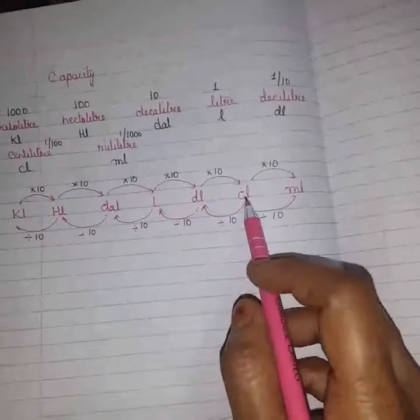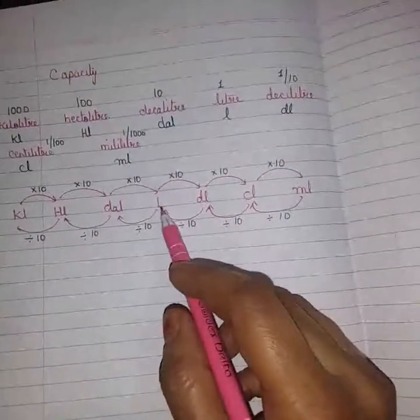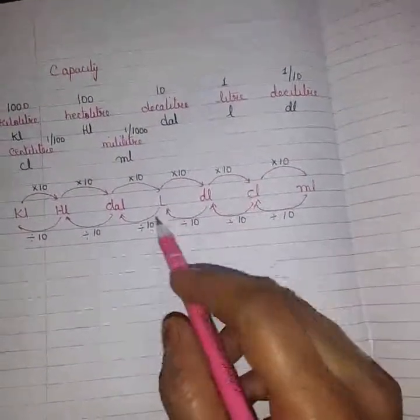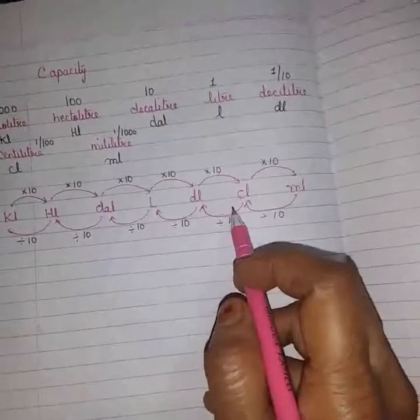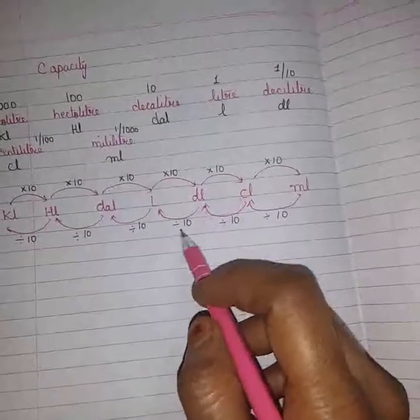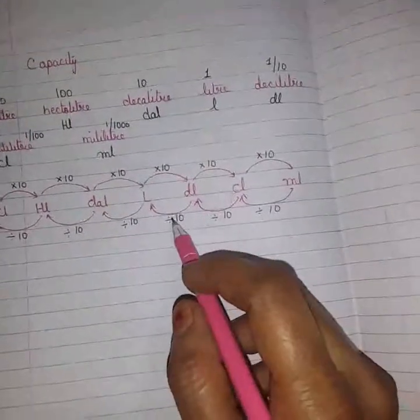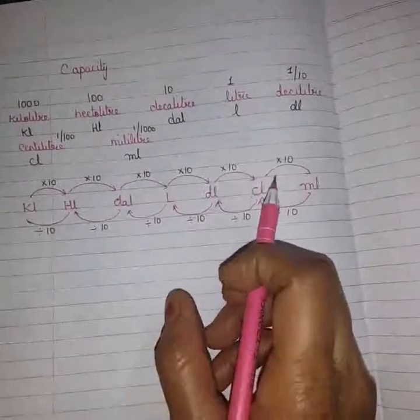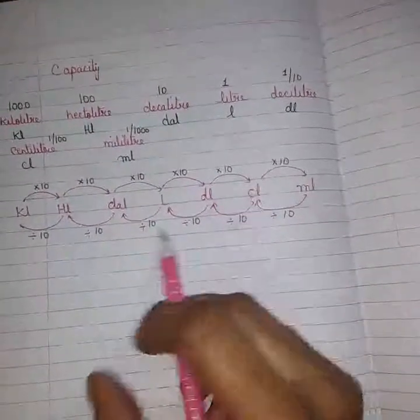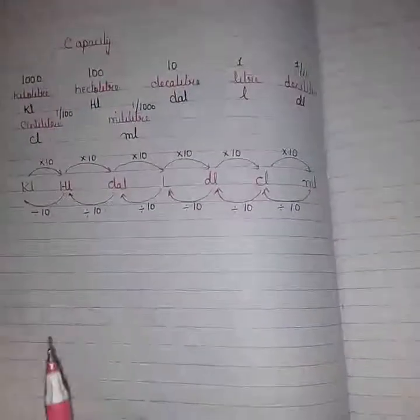Let's take one more example. If we want to convert centilitre to litre — we are moving right to left — how many skips? One skip, two skips. So this is divide by 100. Always remember: left to right, multiply. Right to left, always divide. Today's work is to learn all three of these tables properly.